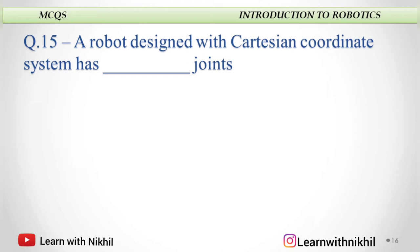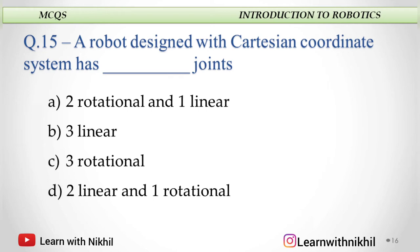A robot designed with a Cartesian coordinate system has dash joints — two rotational one linear, three linear, three rotational, or two linear and one rotational? In a Cartesian coordinate system, it has three linear joints. It can be PPP or SSS, where P is prismatic (sliding).